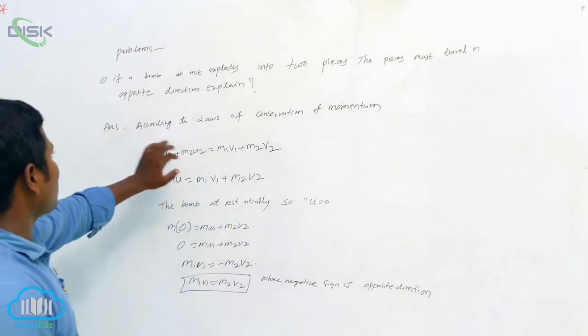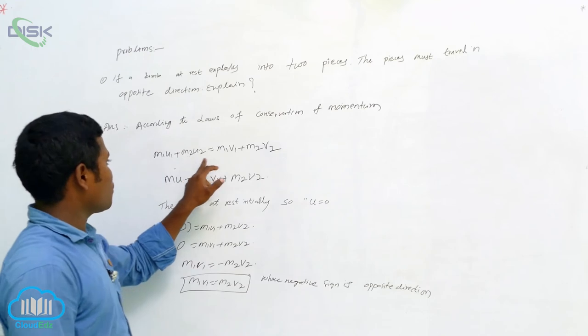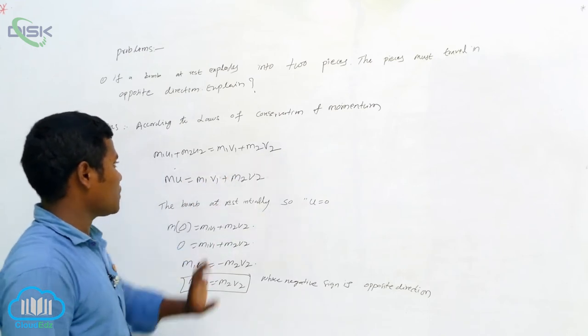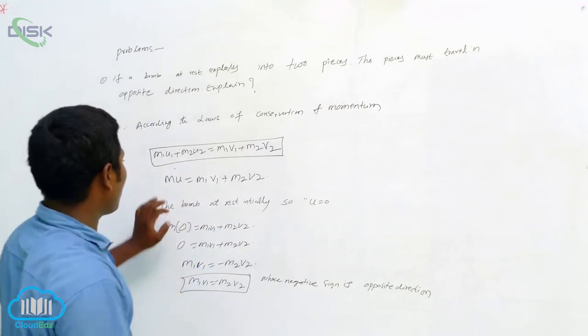So the question is given like this. According to law of conservation of momentum, M1U1 plus M2U2 is equal to M1V1 plus M2V2. This is the law of conservation of momentum if two bodies are traveling.